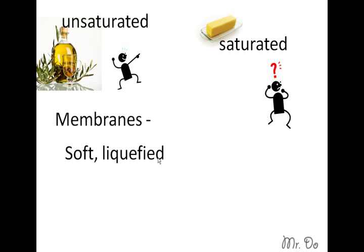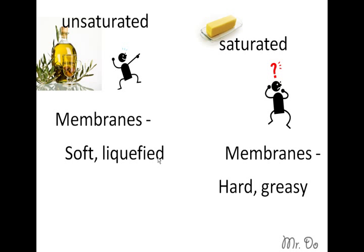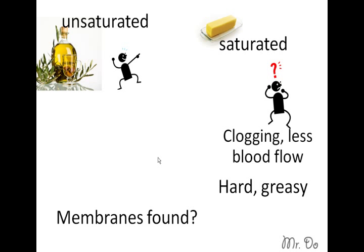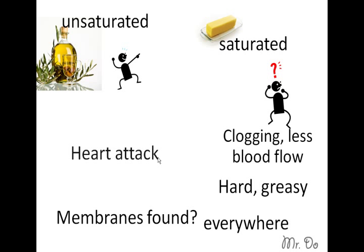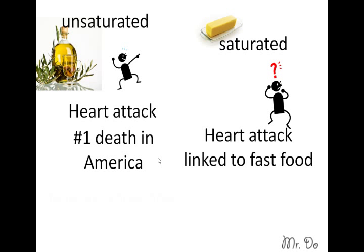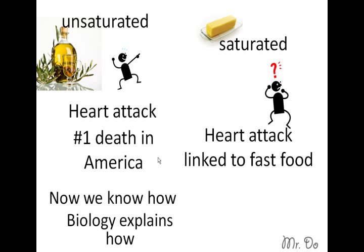If you eat a lot of unsaturated fat, your membranes tend to be soft and liquefied. Whereas if you have a lot of saturated fat, your membranes tend to be hard and greasy. Membranes are found everywhere, so if you eat a lot of saturated fat, at room temperature your membrane tends to solidify, which can cause clogging and less blood flow, which may lead to heart attack. Heart attack is the number one cause of death in America, and it is linked to fast food — and now we know how, through biology.